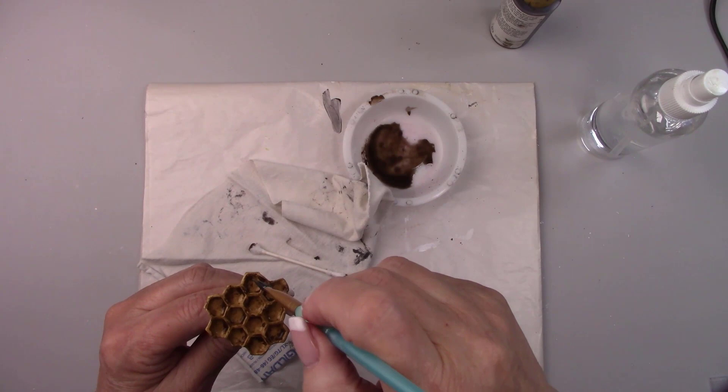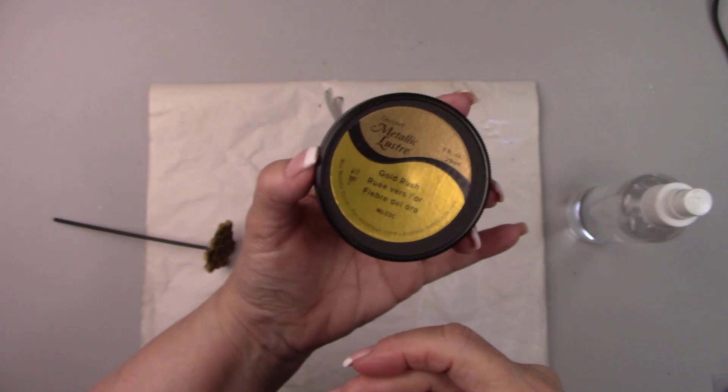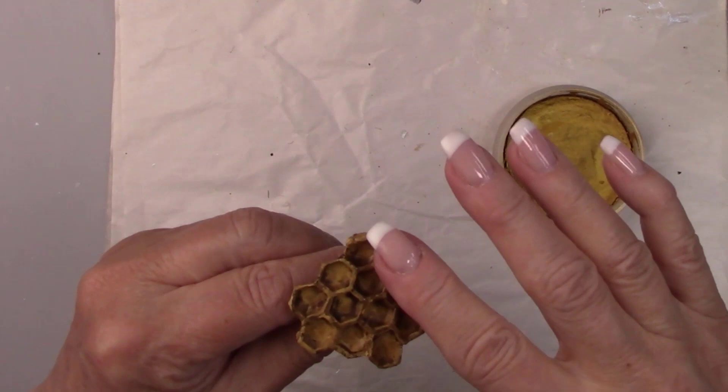After that dried, I added some gold rub and then some pearl white rub to highlight it. Then sprayed it with a high gloss sealer.